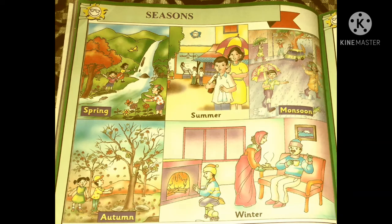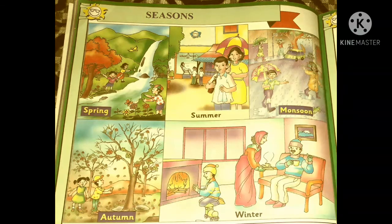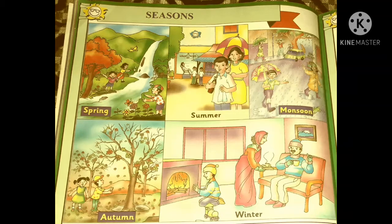We can see the picture of Monsoon season. In Monsoon season, children are enjoying the rain. When it rains, children enjoy rain very well. In Monsoon season, children wear raincoats, carry umbrellas, and wear gumboots. We use umbrellas, raincoats, and gumboots in rainy season.